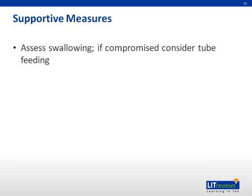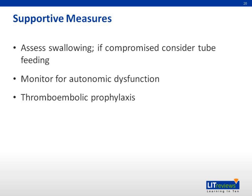Swallowing may be compromised, and if so, tube feeding is indicated. Cardiac monitoring for autonomic dysfunction, such as brady- and tachyarrhythmia and BP fluctuations, should be performed. Thromboembolism prophylaxis with low molecular weight heparin and compression devices should be considered for immobile patients.